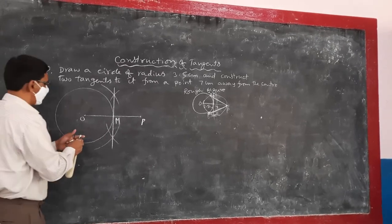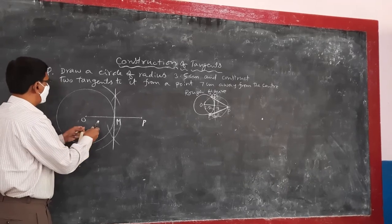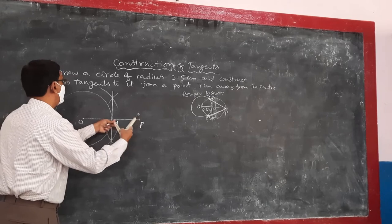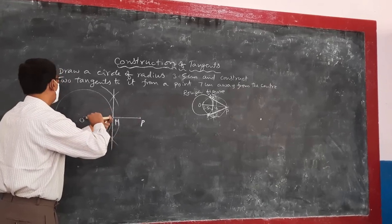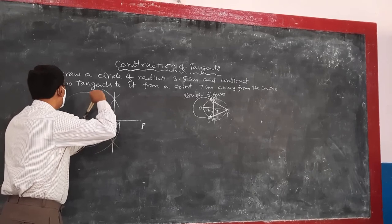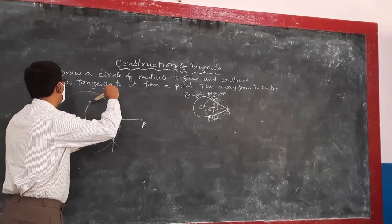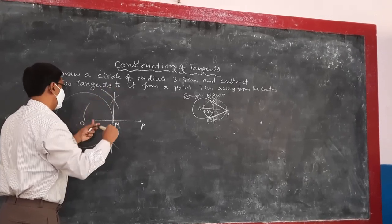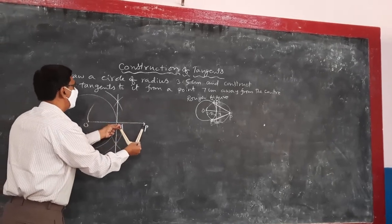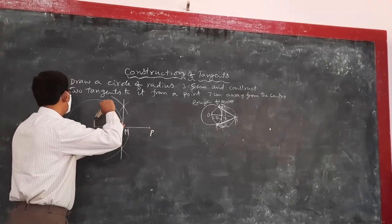With M as the center and OM as the radius, you have to construct another circuit. M as the center, you are constructing.